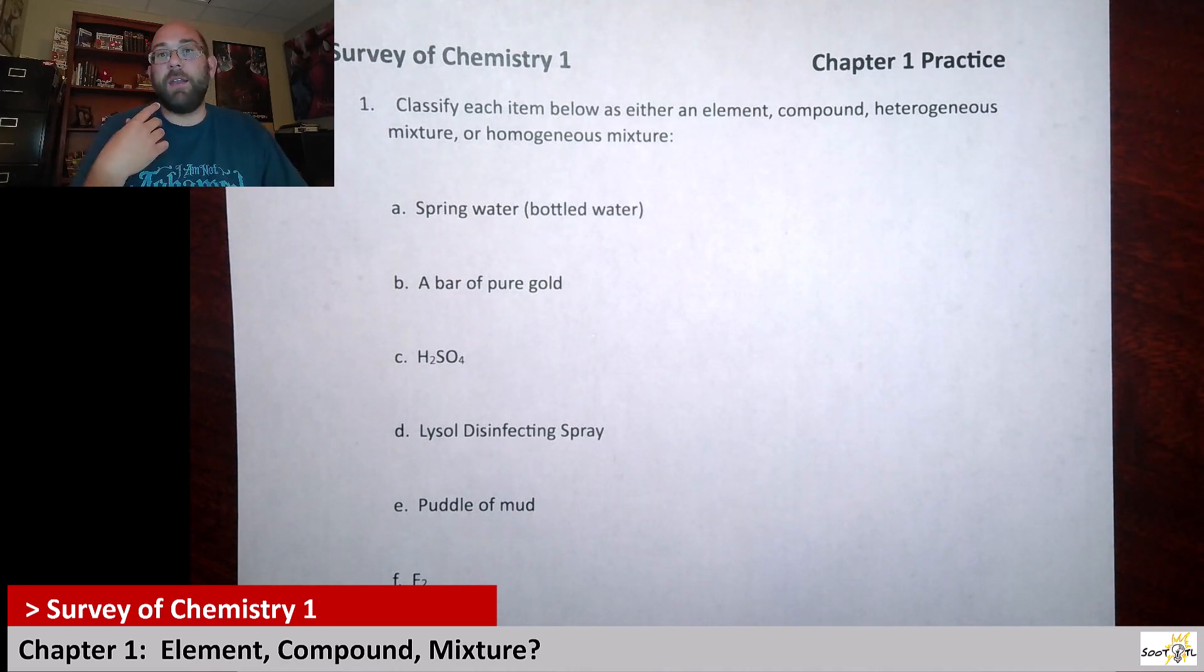And then compound is where you're going to have two or more of either one element or a bunch of different elements. And then mixtures are even more complicated because mixtures usually require that you have at least two compounds. And based off what those mixtures look like, it's going to tell you whether they're homogeneous or heterogeneous.